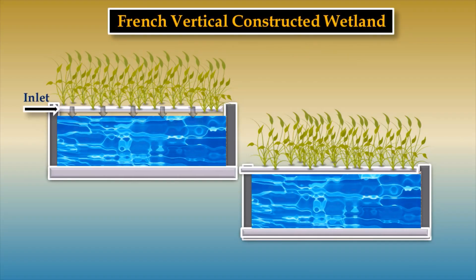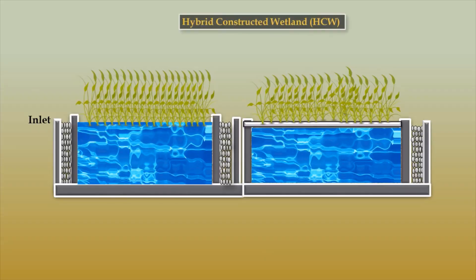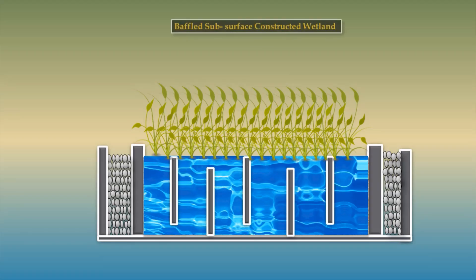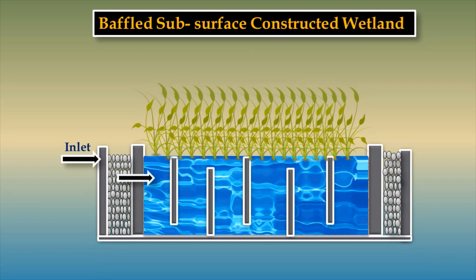The French-based Constructed Wetland is a two-stage vertical flow constructed wetland arranged in a parallel manner and functions in series. Hybrid Constructed Wetland is a multi-stage treatment system combining Horizontal Flow Constructed Wetland and Vertical Flow Constructed Wetland. The Baffled Subsurface Flow Constructed Wetland consists of vertical baffles which guide the wastewater to flow up and down.